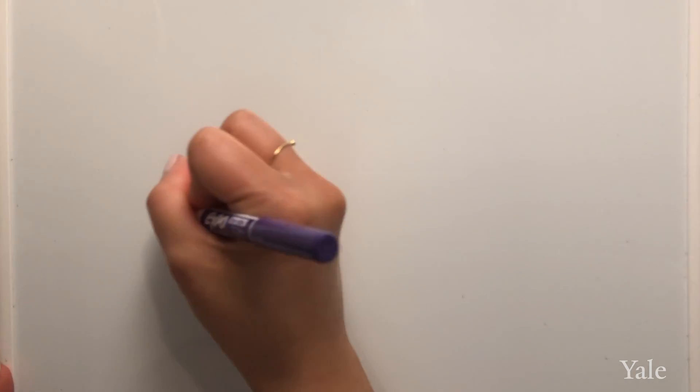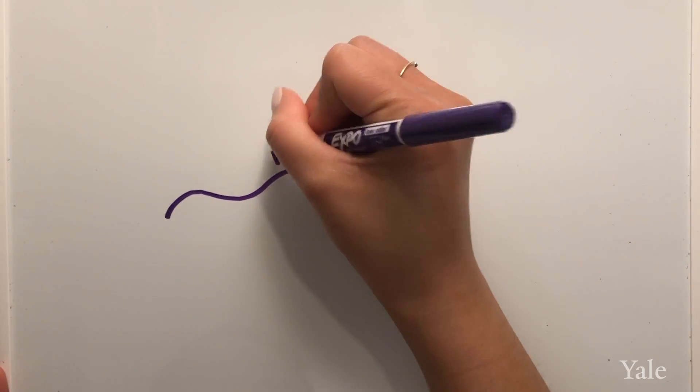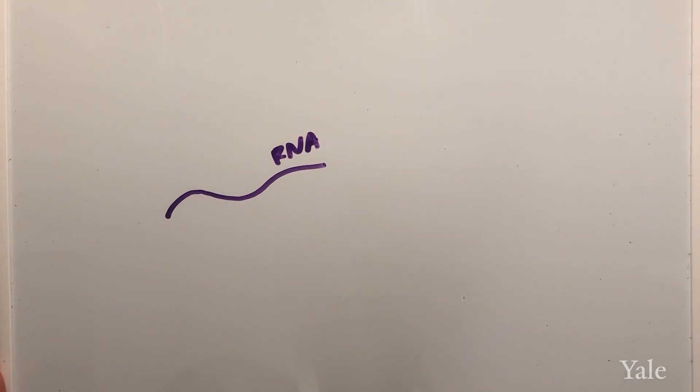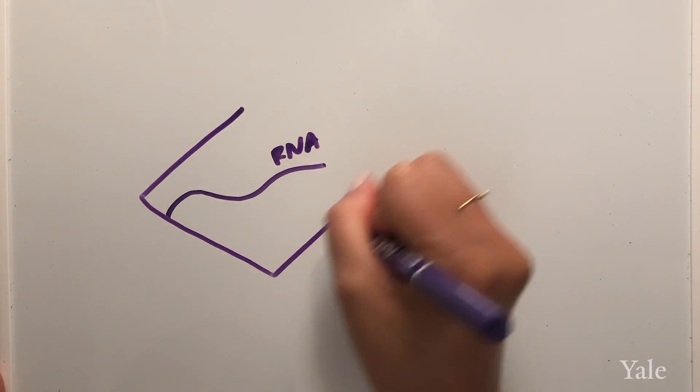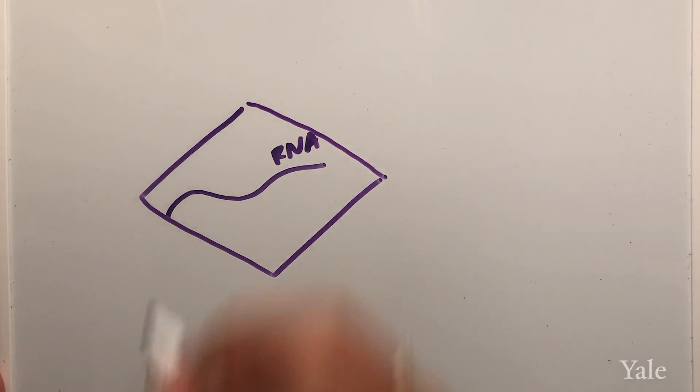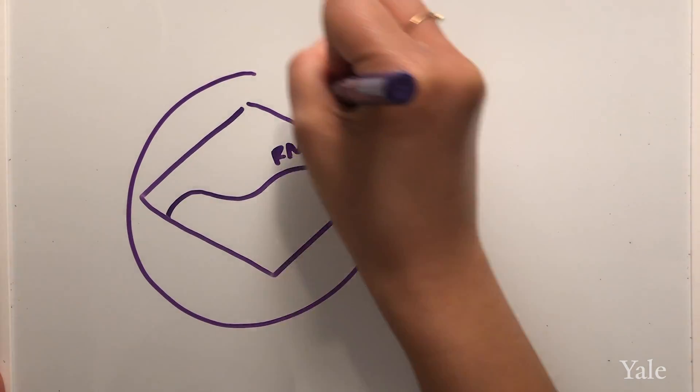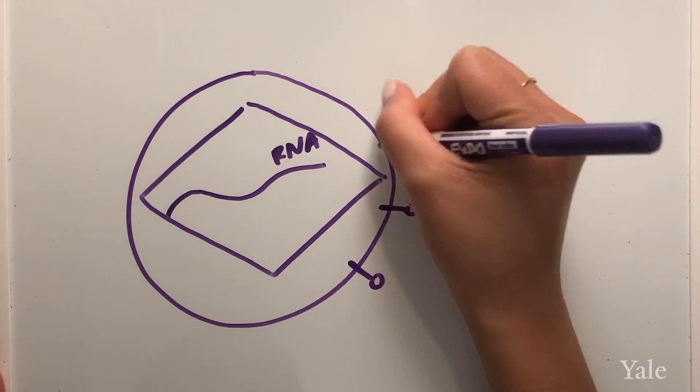All viruses carry some kind of genetic material, DNA or RNA. COVID-19's genetic material is RNA encased by a protective shell called a capsid. This is all surrounded by an envelope made of lipids, which are essentially fats, and proteins.